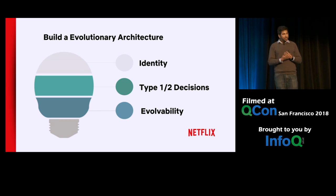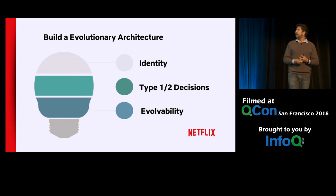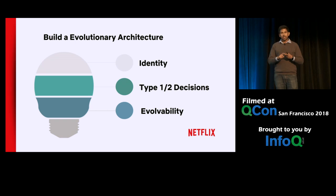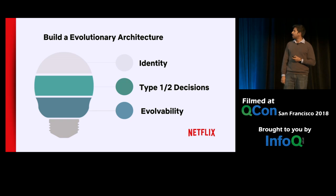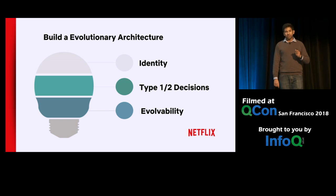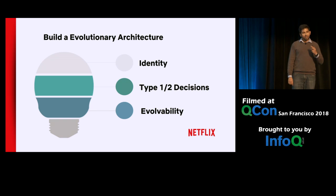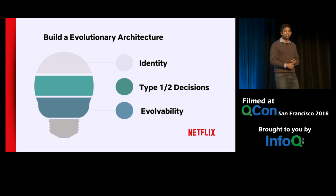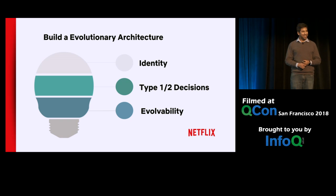To summarize: I would encourage you to think about building an evolutionary architecture. Build a strong domain-specific identity and iterate on that identity so you always keep it in mind while building your architecture. Invest in the type one and type two decisions framework — determine what constitutes your type one decisions and spend 80% of the time debating and aligning on those choices. And finally, ensure that your architecture can evolve across multiple dimensions and use fitness functions to act as your guide. That's all I've got. Thank you very much.